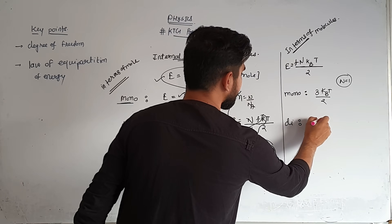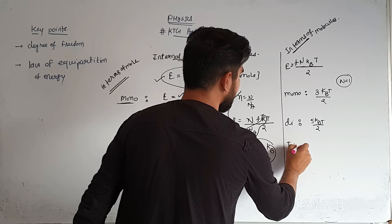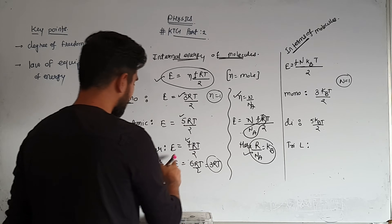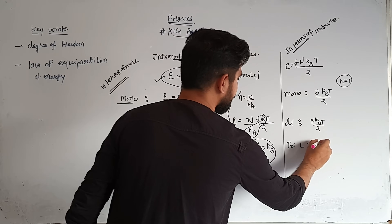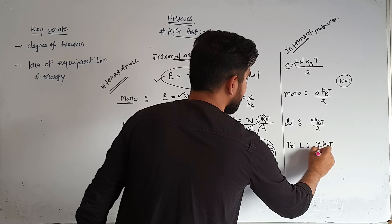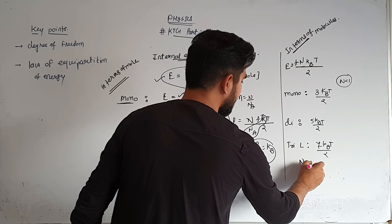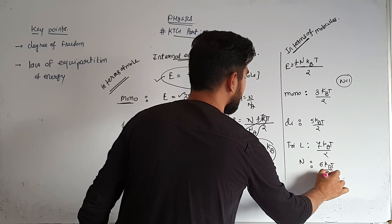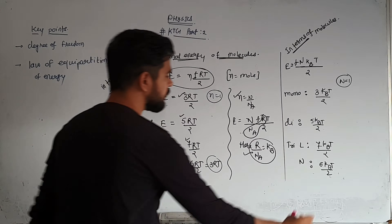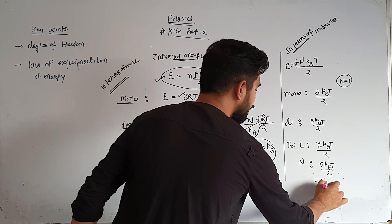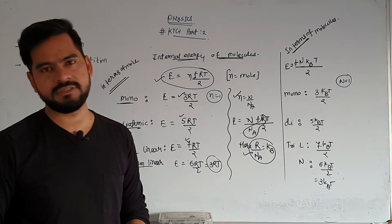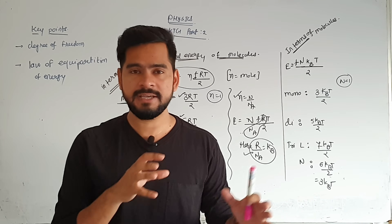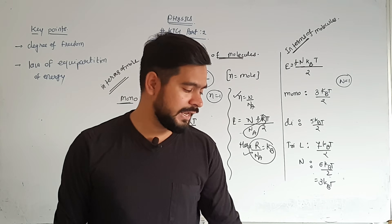For triatomic linear like O₃, the degrees of freedom is 7, so the equation will be 7kBT/2. And if it is non-linear, we place 6, giving 6kBT/2, which simplifies to 3kBT. These are the equations — now practice the numericals carefully, understanding where and how to apply them. This is the end of KTG.